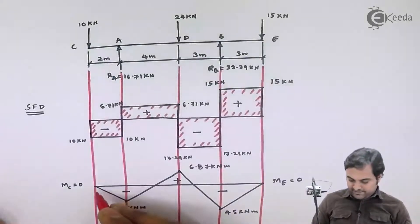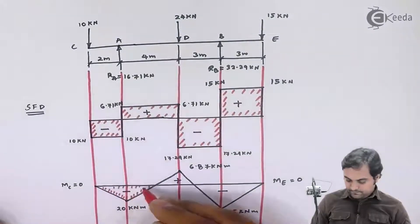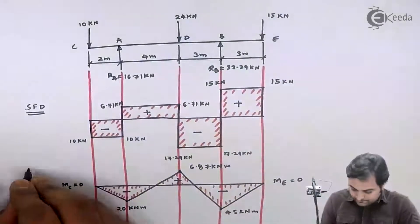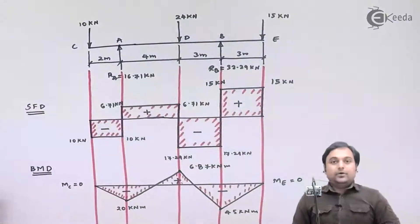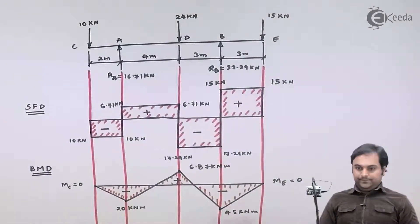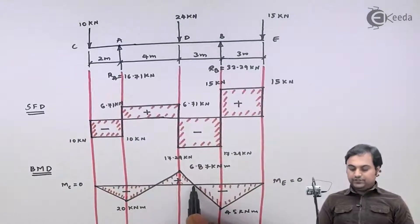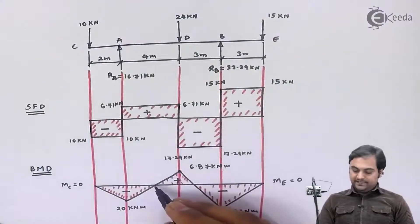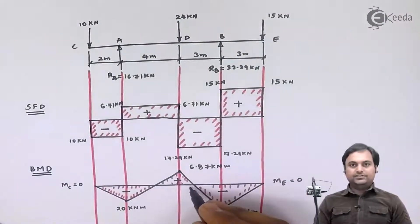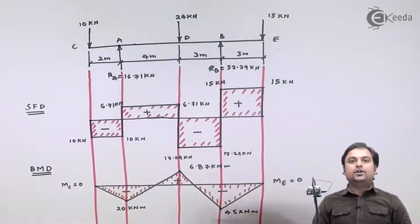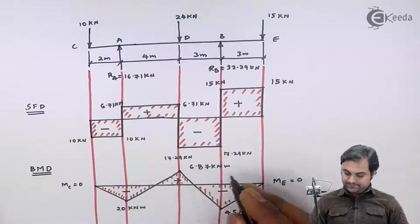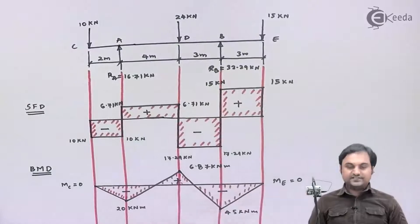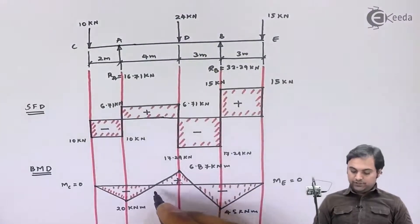Here we have completed the bending moment diagram. In the BMD, there are two points where the bending moment is changing its sign — or you can say the bending moment is zero at these two points. These points are called points of contraflexure. We have two such points, and we need to know the location of these points.